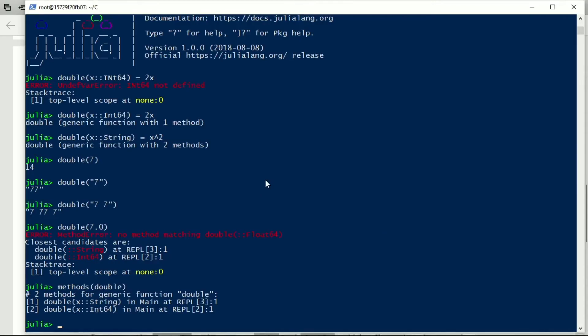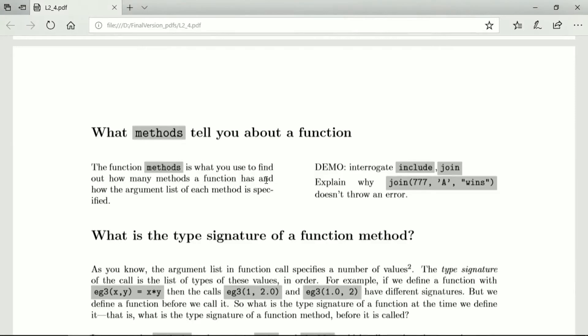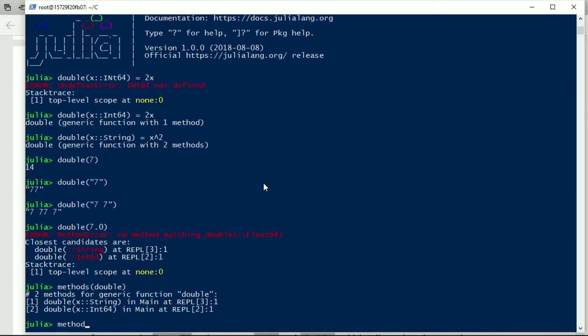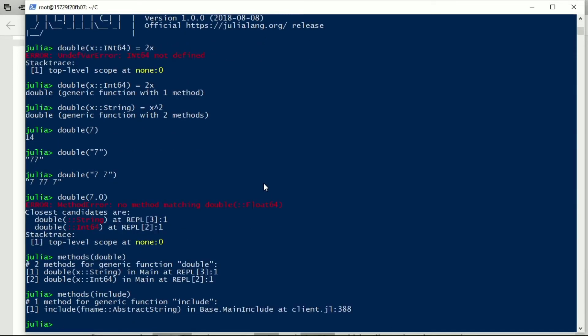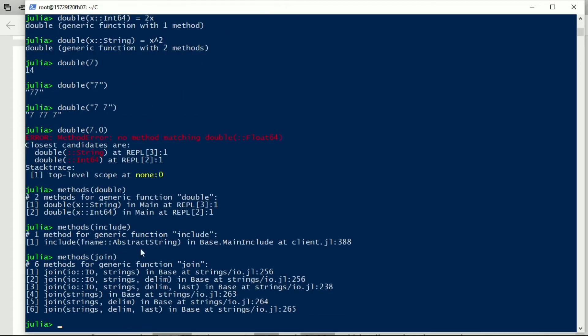Now, let's look at some other built-in functions methods. If we apply that to the include function, which we use to run Julia code at the input prompt, it says that all we need is a function name, and it must be of a type called abstract string, which we will not discuss in this course, but basically there's only one method. If, however, we use join to ask for all the methods of join, then there are six different methods, as we discussed when we first looked at the function join.